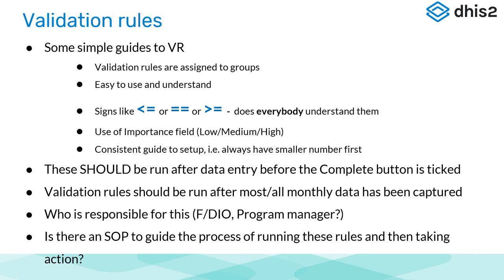Some simple guides to validation rules: validation rules are assigned to groups. They must be easy to use and understand — we must try to make them simple. Signs like less than, equal to, or greater than — are you sure everybody understands them? Make sure that everybody understands them. When you set up a validation rule, there is an importance field which is low, medium, or high. What guides you to what to select for that, or do you just select the default?